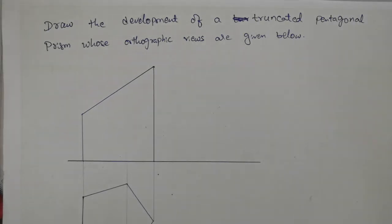Hi everyone, in this video we are going to see how to draw the development of a truncated pentagonal prism. Truncated implies it is sliced or cut by a sectional plane.